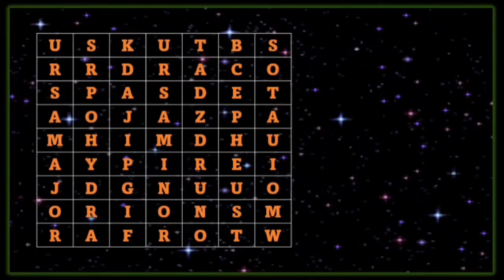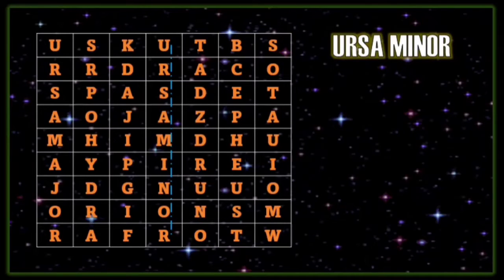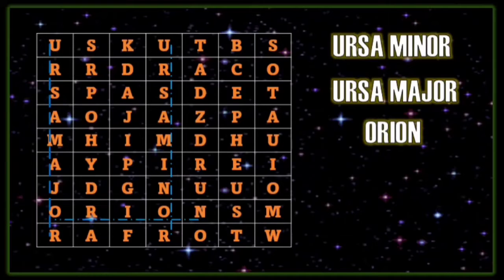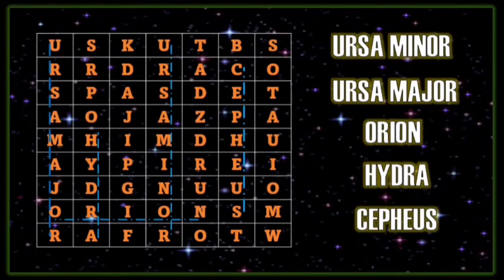Let's have an opening activity. All you have to do is to find the five names of constellations by connecting the letters to find the word on the puzzle. So let's begin. If you can see the word Ursa Minor, your answer is correct. Next, if you see the word Ursa Major, your answer is correct. If you see the word Orion, your answer is right. If you see the word Hydra, very good, your answer is correct. And if you see the word Cepheus, your answer is right.